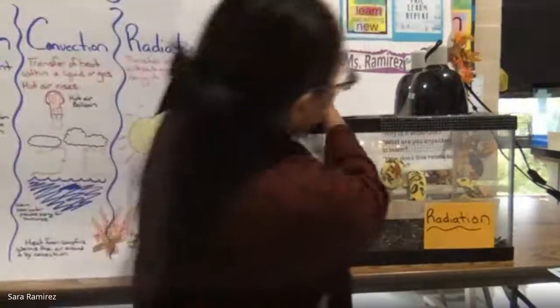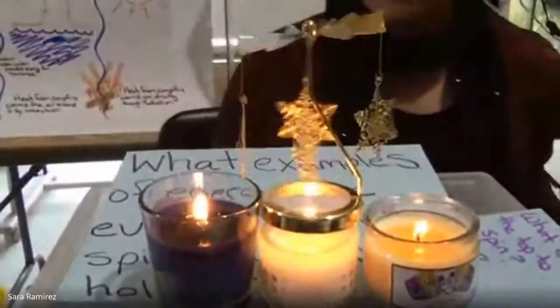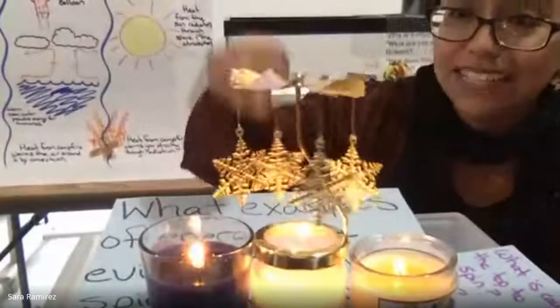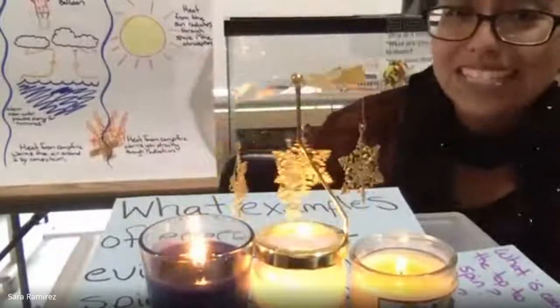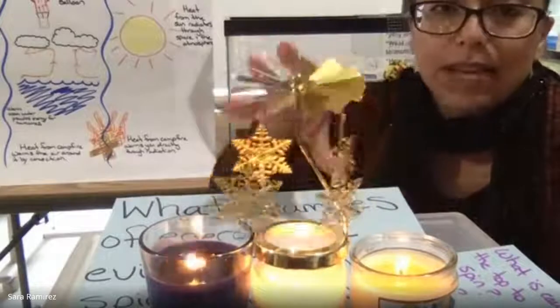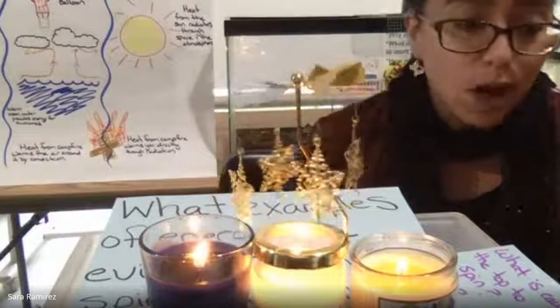Think about how you used heat energy and thermal energy today. For a challenge question: I have a candle spinner — a candle with a spinner on top. What example of energy is evident in this spinning candle? Think about what is causing the top to spin and why. That's all for thermal energy — we're passing it back to Mr. Broughton for questions.